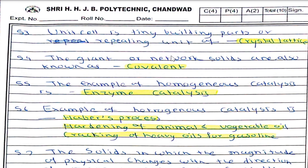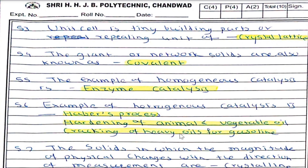Giant or network solids are also known as covalent solids. An example of homogeneous catalysis is enzyme catalysis. Examples of heterogeneous catalysis are Haber's process, hardening of animal and vegetable oils, and cracking of heavy oils for gasoline.